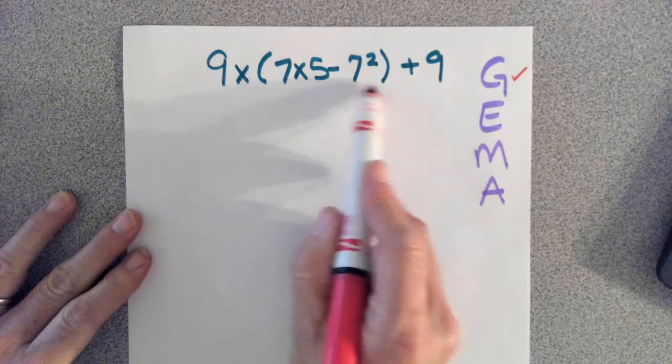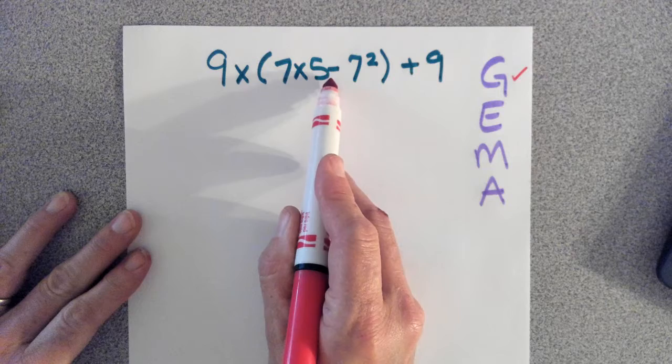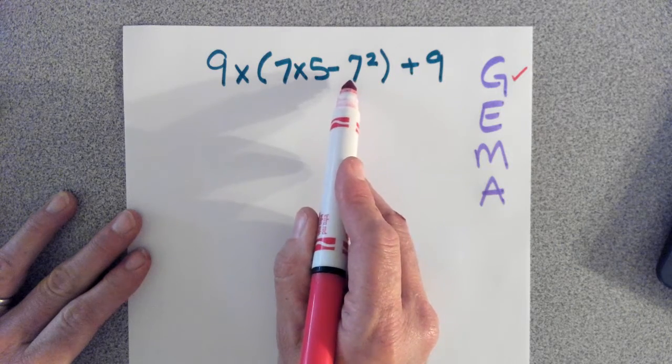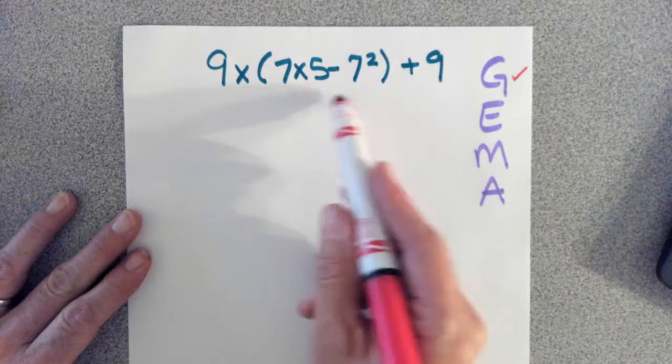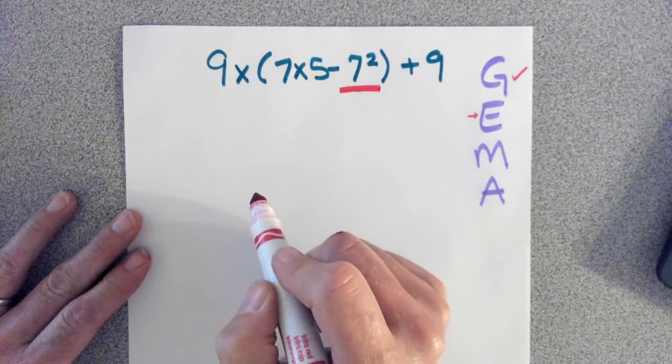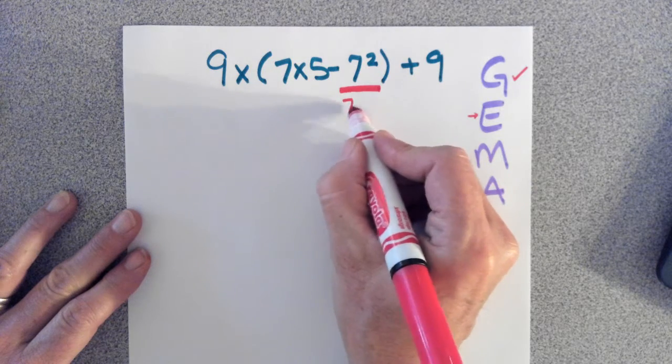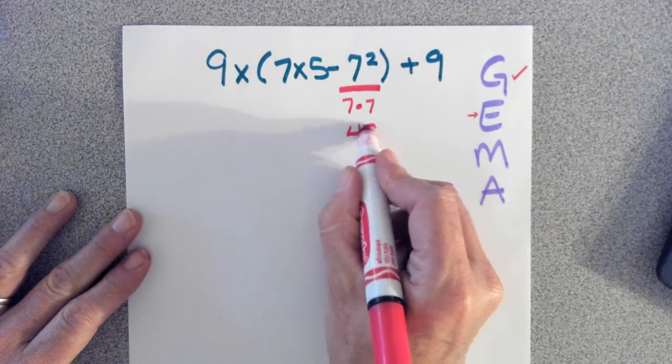Now inside the grouping here, I've got multiplying 7 times 5, I've got subtraction, and I have exponents. We have to follow this same order of operations inside the grouping. So we're going to start with the exponents. 7 to the power of 2 means 7 times 7. 7 times 7 is 49.